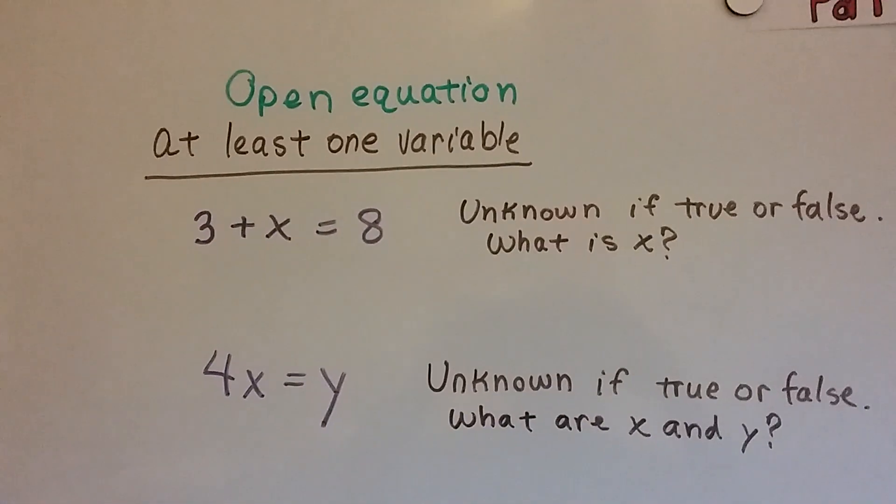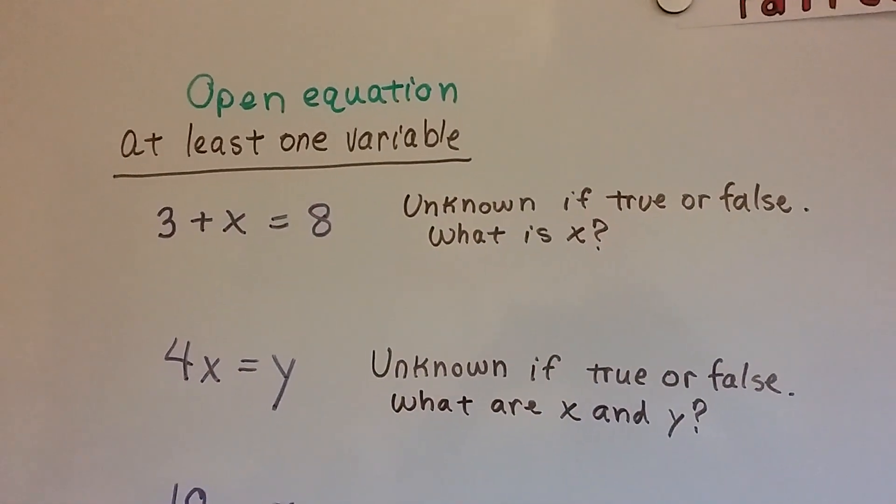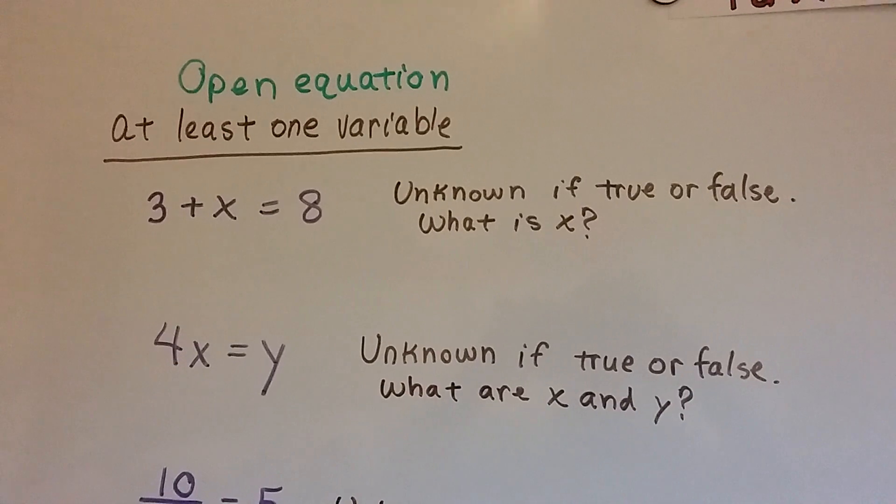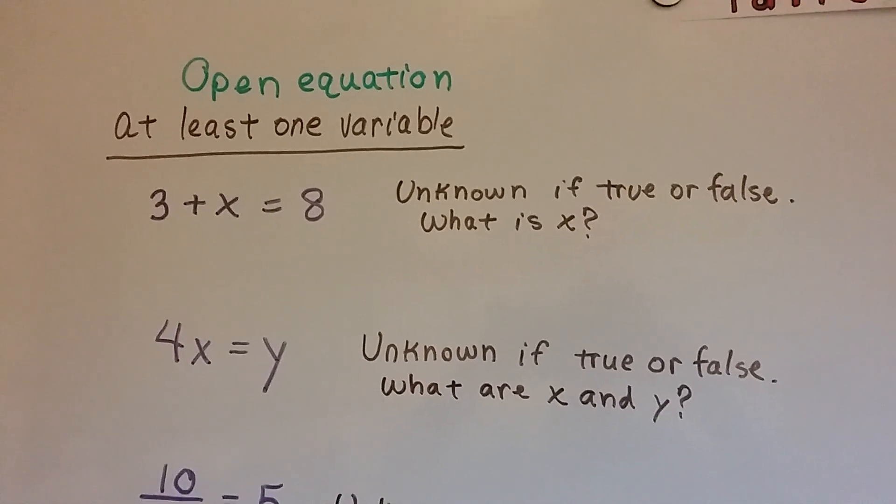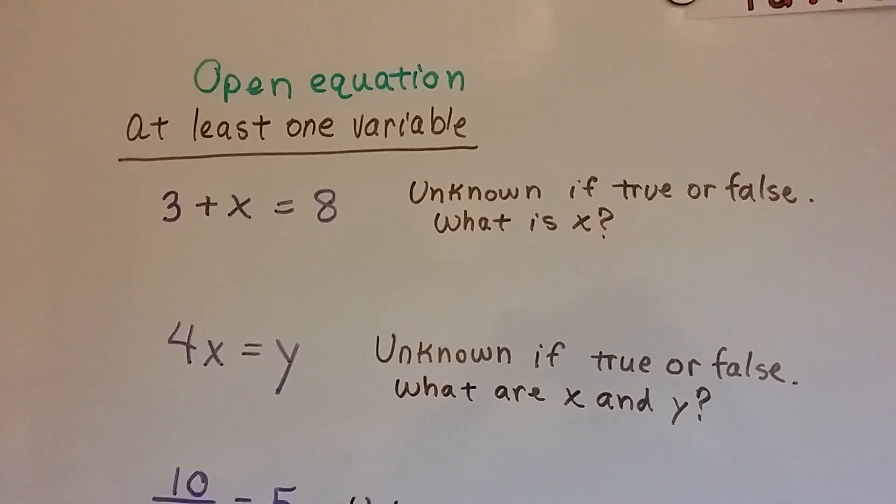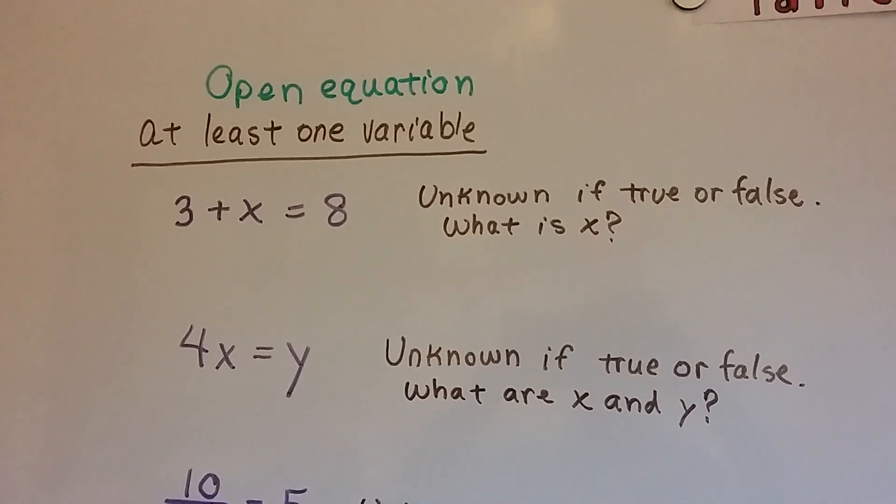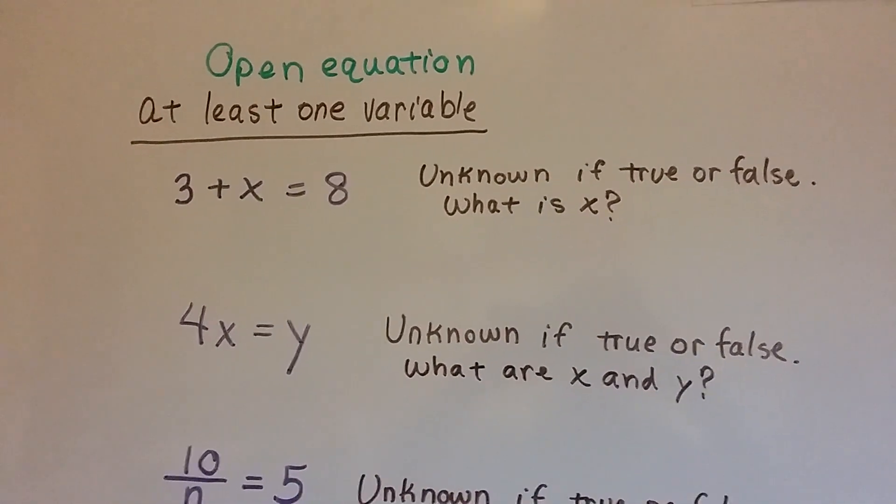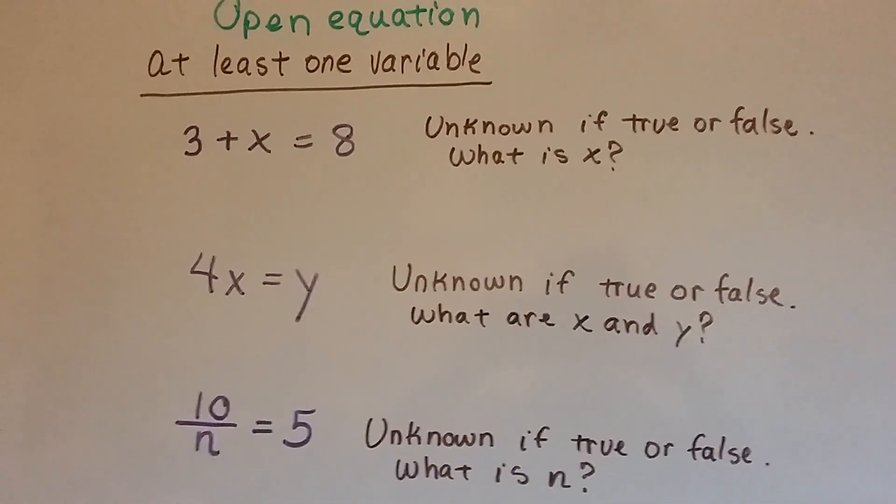With an open equation that has at least one variable, look at 3 plus x equals 8. It's unknown if it's true or false because we don't know what x is. What if x is 10? 3 plus 10 isn't 8. We don't know what x stands for. So it's unknown. It's an open equation.